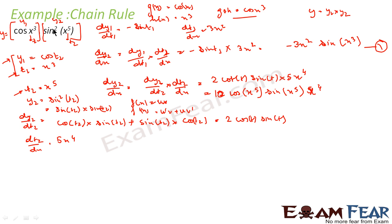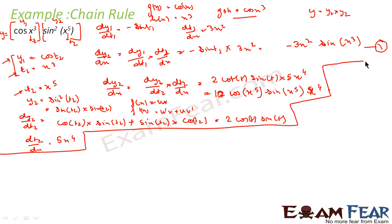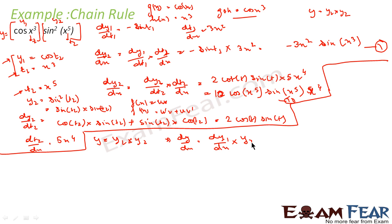Now, since the original function is a product of two functions y = y1 · y2, I have to again use the product rule. I have two equations: dy1/dx and dy2/dx. Since y = y1 · y2, by the product rule: dy/dx = (dy1/dx)·y2 + y1·(dy2/dx). Same formula: if f(x) = uv, then f'(x) = u'v + uv'. Let us put the values in.